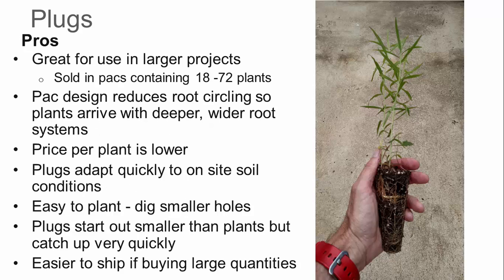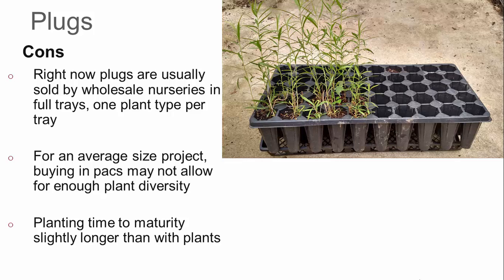If you use plugs, the pros include great for use in larger projects because you can buy them in larger quantities. Packs are designed to reduce root circling so plants arrive with deeper, wider root systems. Price per plant is lower. Plugs adapt quickly to on-site soil conditions, and they're easier to plant because you're digging smaller holes. Plugs do start out smaller but can catch up very quickly. Some cons: plugs are usually sold by wholesale nurseries in full trays, meaning one plant type per tray, so you don't usually get a mix. For an average size project, buying in packs may not allow for enough plant diversity, and planting time to maturity is slightly longer than if you went with larger plants.